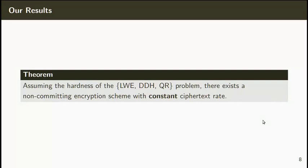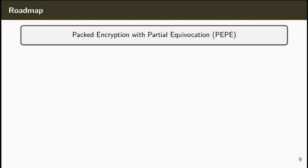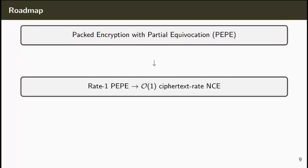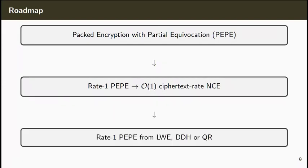Specifically, we show how to construct non-committed encryption with constant ciphertext rate in the plain model from standard assumptions such as learning with errors, decisional Diffie-Hellman and quadratic residuosity. To achieve our result, we first introduce a new cryptographic primitive which we call PACT encryption with partial equivocation, or PEP for short. We then show that RATE1 PEP implies constant ciphertext rate non-committed encryption. Finally, we present constructions of RATE1 PEP from the hardness of LWE, DDH or QR.